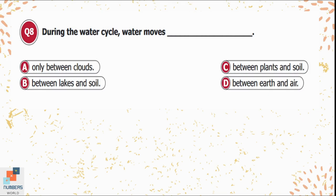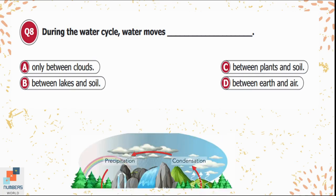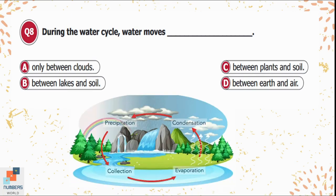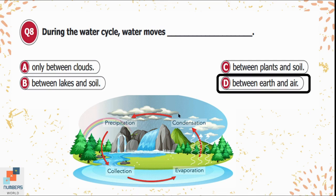Question 8: During the water cycle, water moves — option A) only between clouds, B) between lakes and soil, C) between plants and soil, D) between earth and air. During the water cycle, water moves between earth and air, so option D is the correct answer.